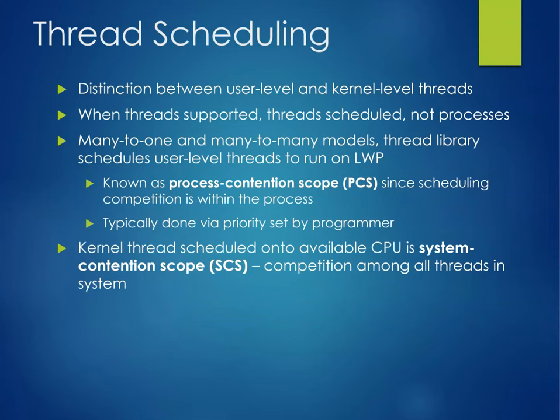Thread scheduling: how does that work in relation to process scheduling? We make a distinction between user-level and kernel-level threads. When threads are supported, threads are scheduled, not processes. In many-to-one and many-to-many models, the thread library schedules user-level threads to run on lightweight processes — known as process contention scope (PCS), since scheduling competition is within the process. Kernel threads are scheduled when a CPU is available, causing system contention scope (SCS), competition among all threads in the system.